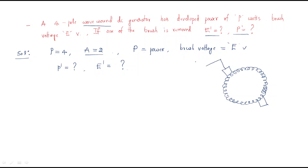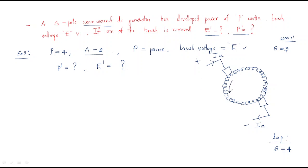It consists of only two brushes — one positive brush and one negative brush. In lap winding, the number of parallel paths equals the number of poles, so brushes would be four. But in wave winding, there are only two brushes. With two brushes, the armature current Ia splits: it divides into Ia/2 and Ia/2, and these two currents flow from the negative terminal to the supply.